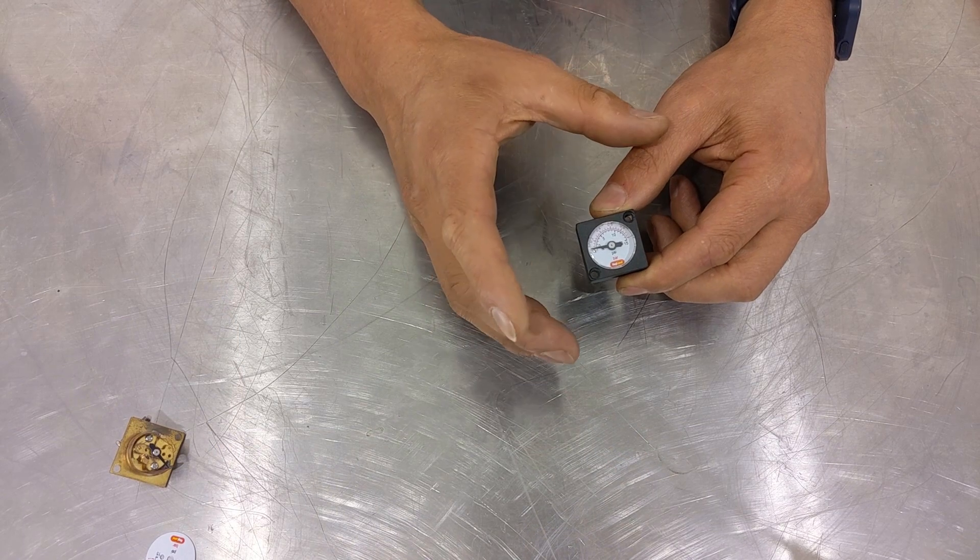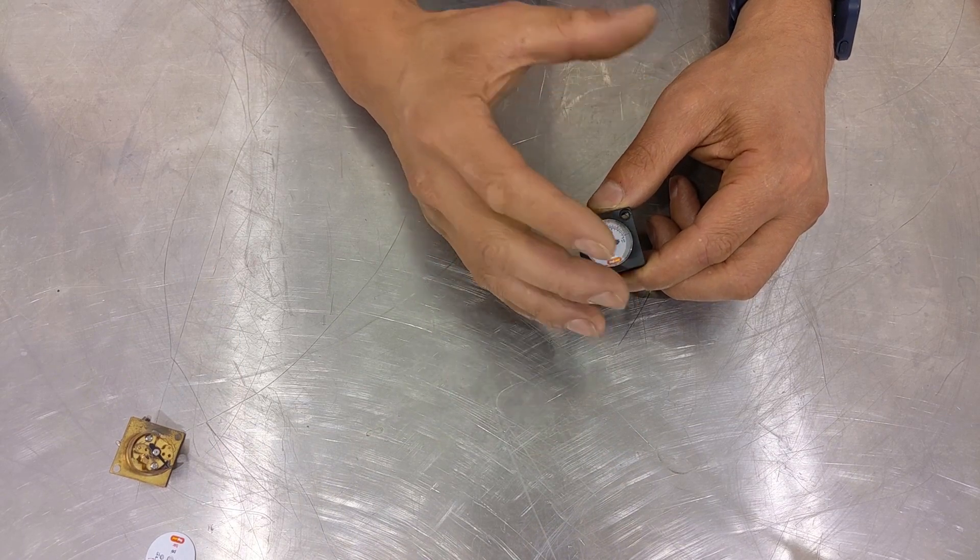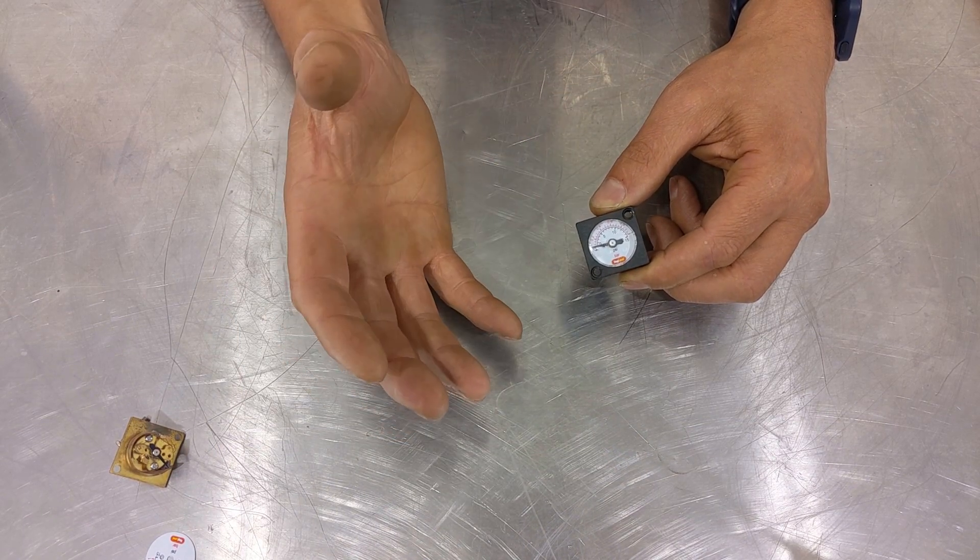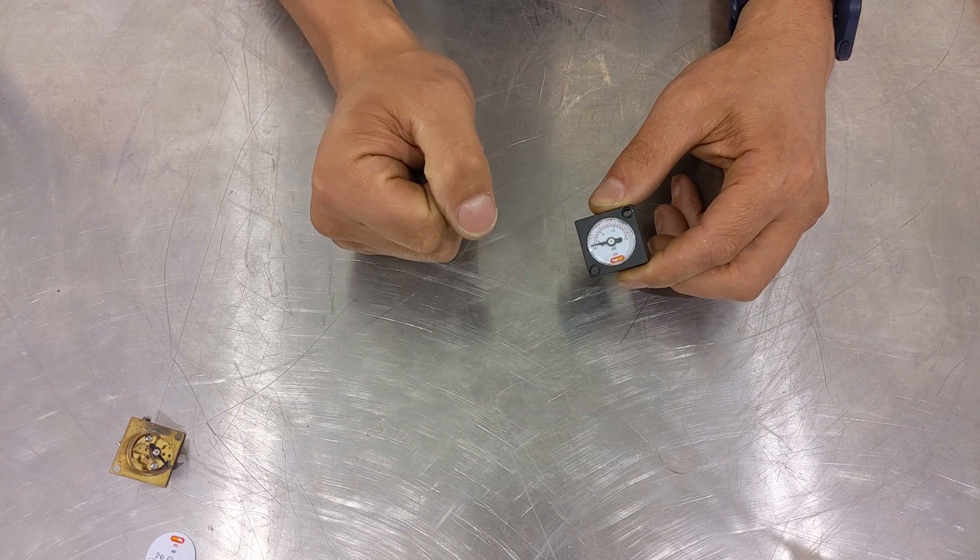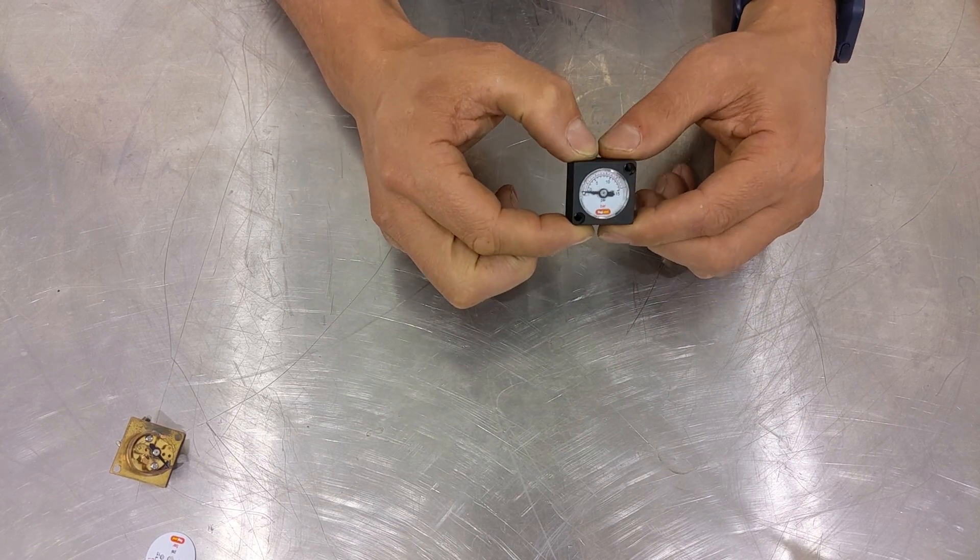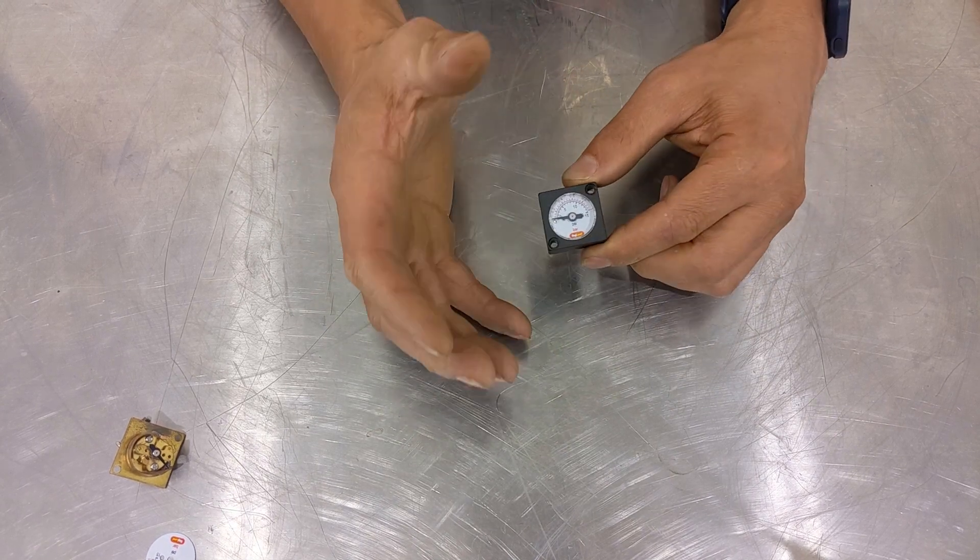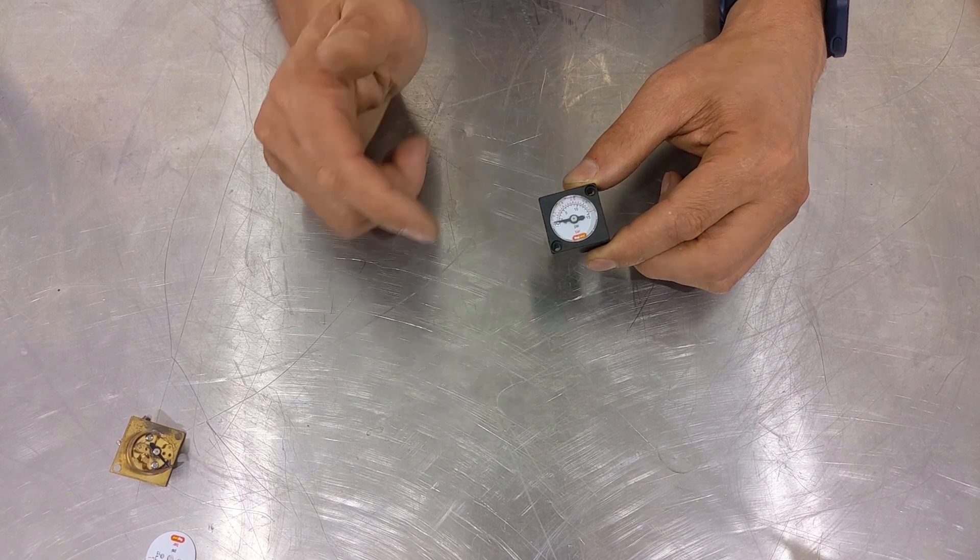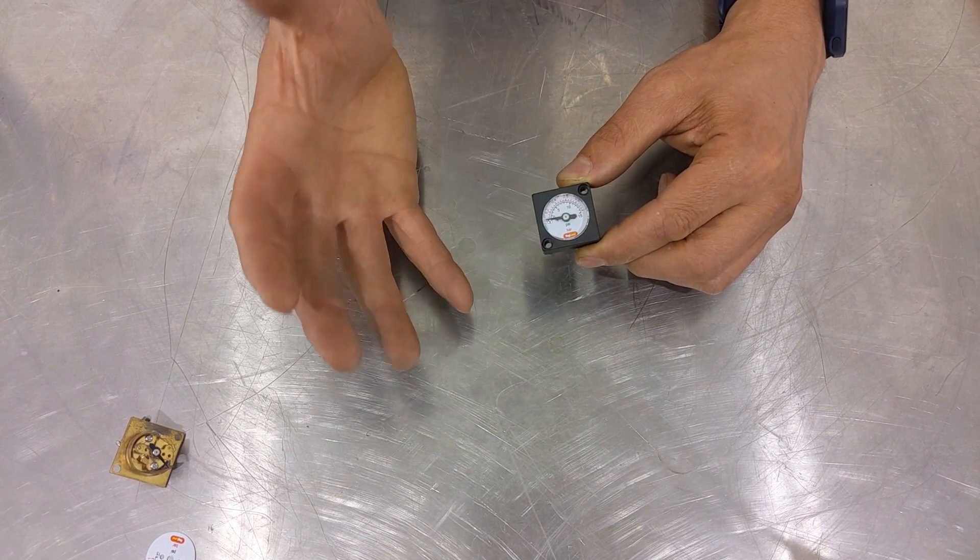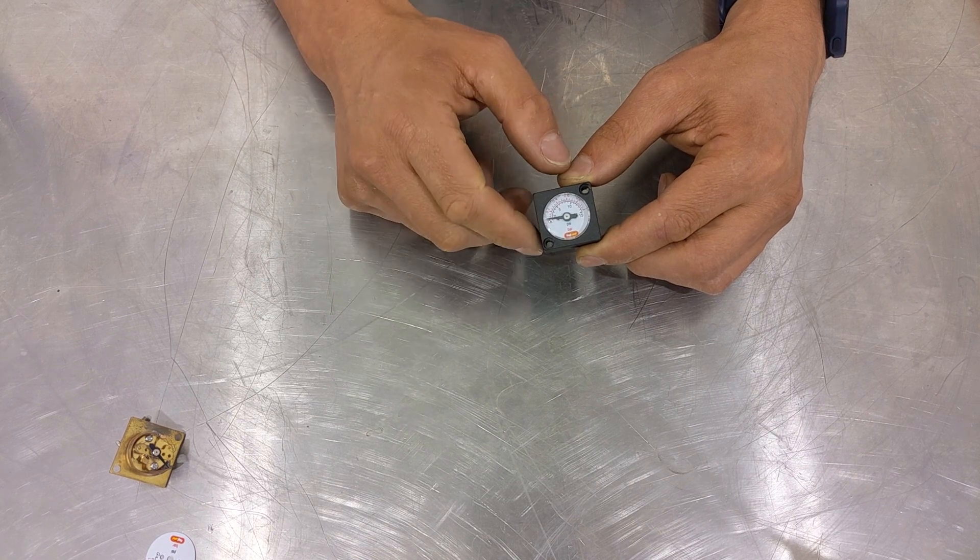Now with larger gauges which are 100 millimeters in diameter, they are often accurate to about one percent of the gauge range. With these mini 27 millimeter gauges, it's just not possible to get a super accurate reading. What we've got here is a gauge which is accurate to about 10% of the gauge range.